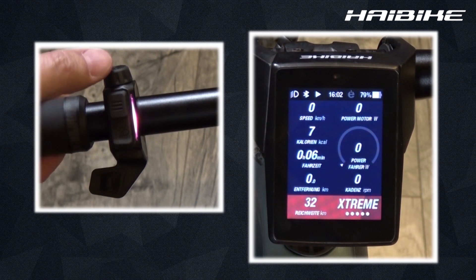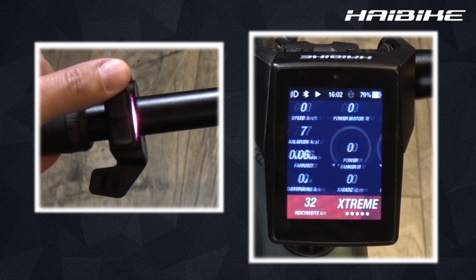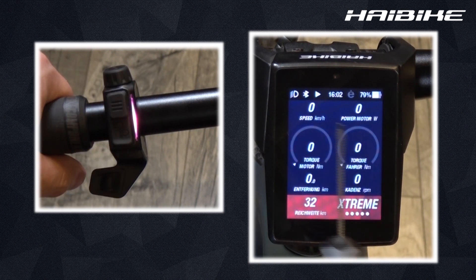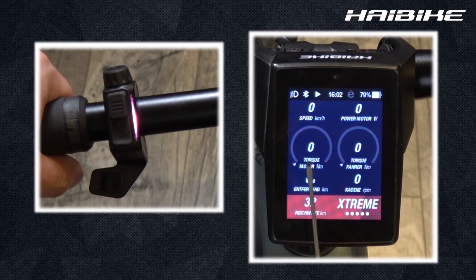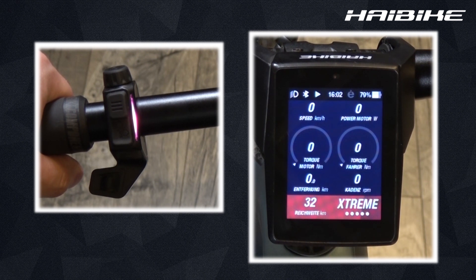The next screen is the performance screen. Here we again see our speed and our motor output power in watts. In the middle, one can see the biker's torque as well as the motor's torque in newton meters, so you can compare the torque of the motor to the torque of the biker. At the bottom left is the distance, and at the bottom right, the cadence.